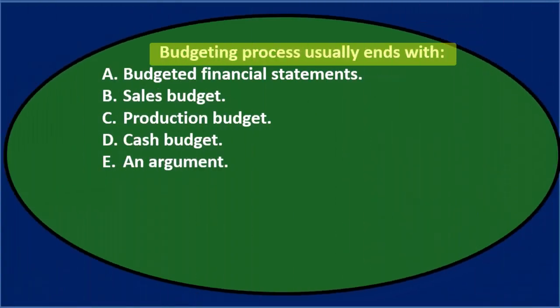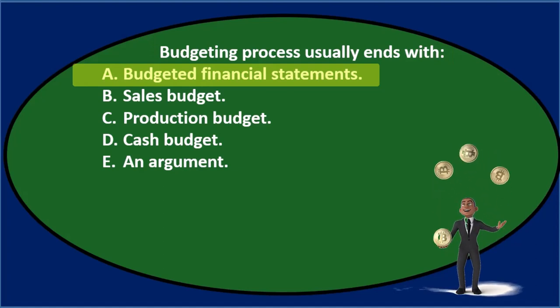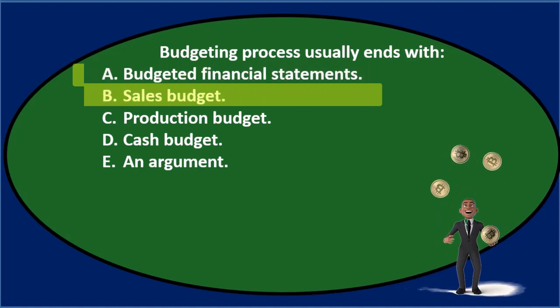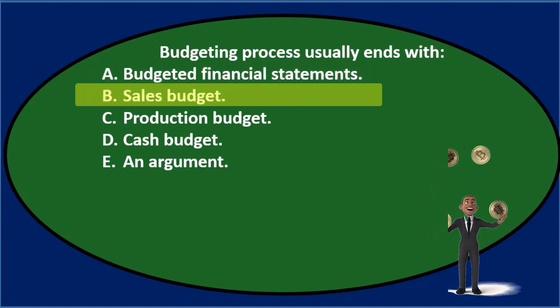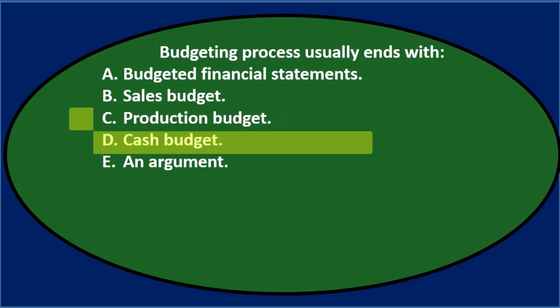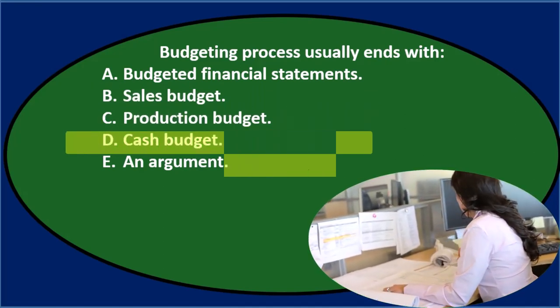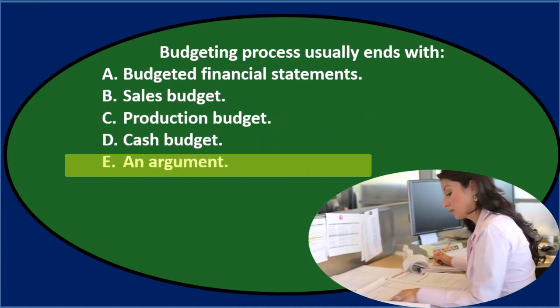First question: The budgeting process usually ends with — A. Budgeted financial statements, B. Sales budget, C. Production budget, D. Cash budget, E. An argument.